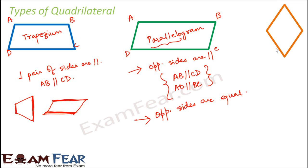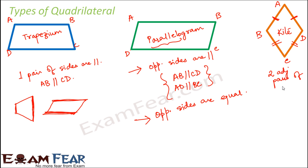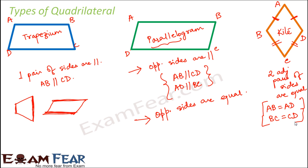The third type of quadrilateral is a kite, which is a very familiar shape. Here two adjacent pairs of sides are equal — this side and this side are equal in length, and similarly these two are equal. So in this case AB is equal to AD and also BC is equal to CD. This is what distinguishes a kite from other quadrilaterals.